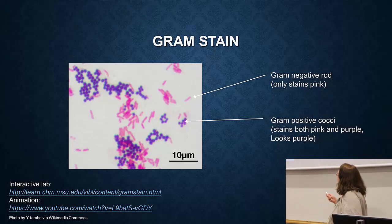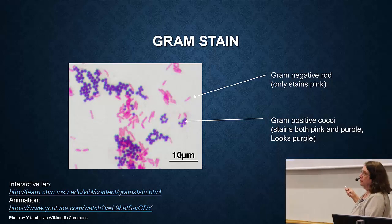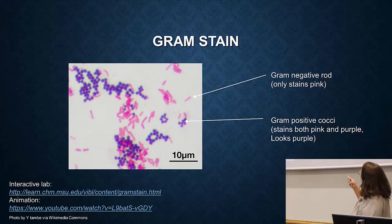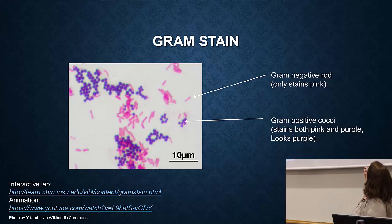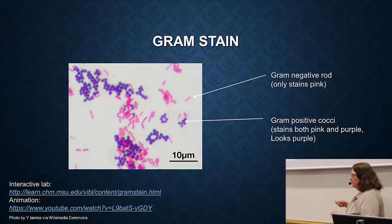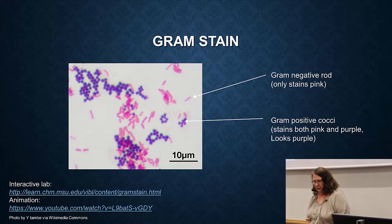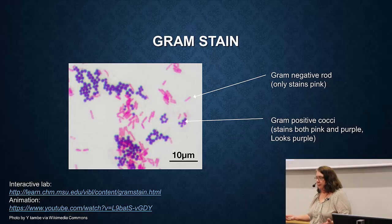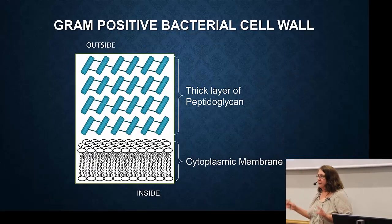Gram stain was invented around 150 years ago, so it's a very old technique which stains bacteria either pink or purple depending on some characteristics. In this example, the pink ones are called gram-negative, and they're gram-negative rod shapes or bacillum. The purple ones are gram-positive cocci — so they're round. Most bacteria are separated into these two categories.